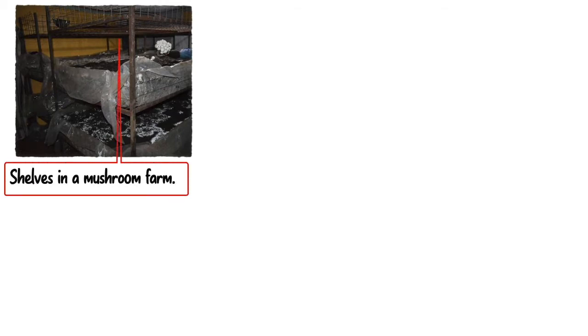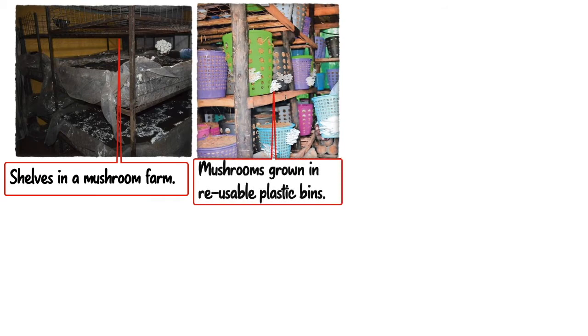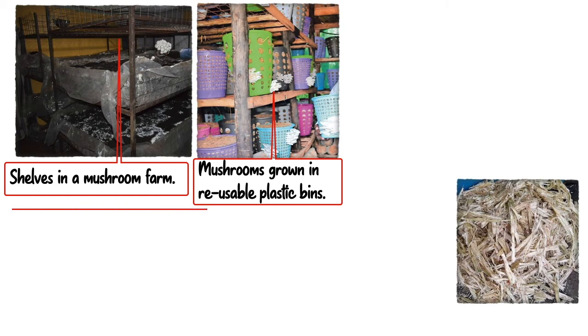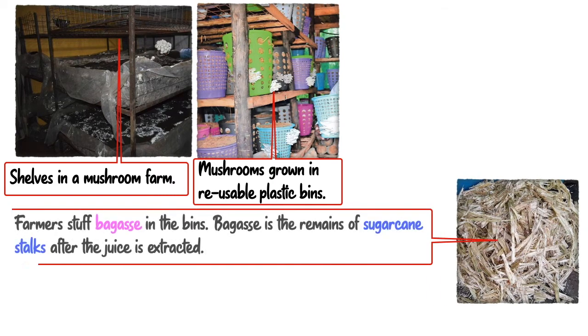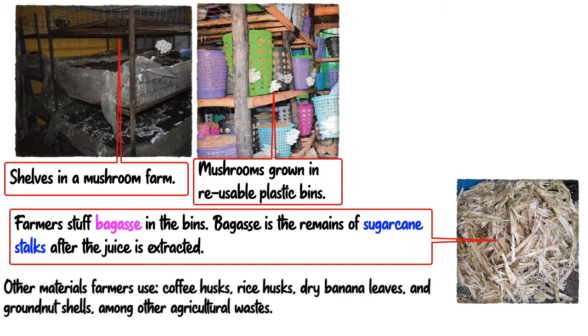The mushroom house is covered completely so that it remains dark inside. You can construct wooden shelves inside, or some farmers grow mushrooms in plastic bins, which have become popular with the ban on polythene bags in Kenya — an innovative and inexpensive method where bins can be reused again and again. Some farmers stuff the bins with bagasse, which is the remains of sugarcane stalks after juice is extracted, freely available as factory waste. Farmers without bagasse use coffee husks, rice husks, dry banana leaves, and groundnut shells, among other agricultural wastes.